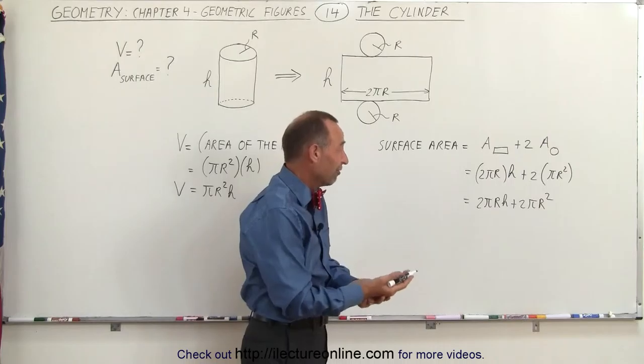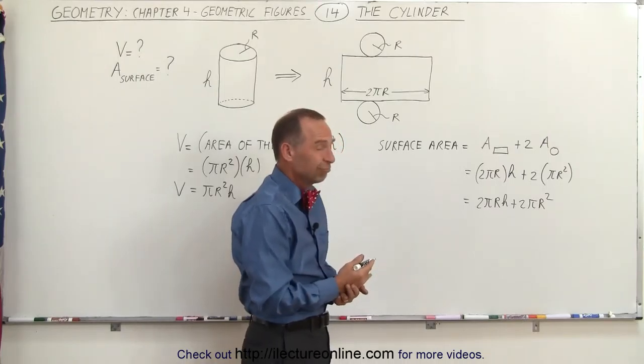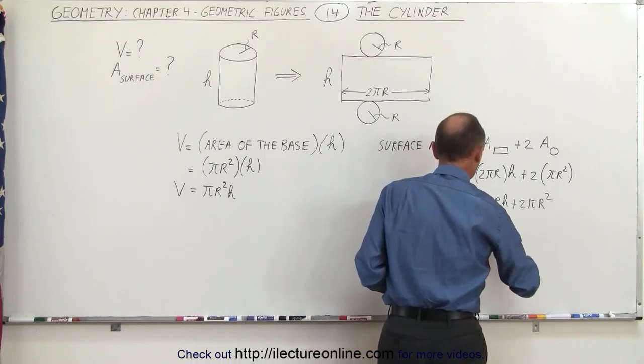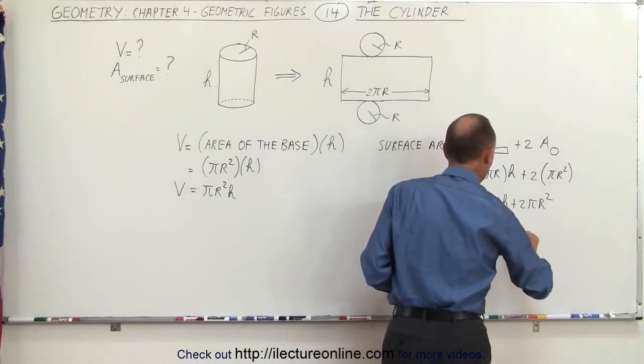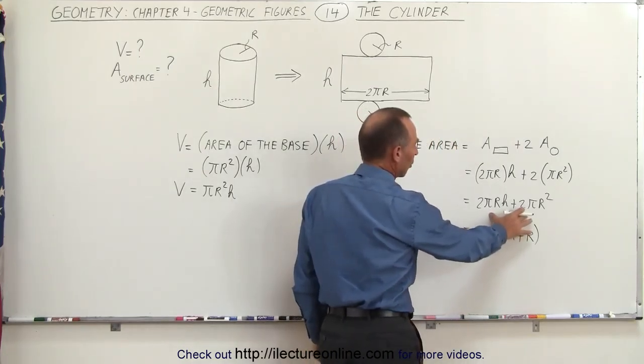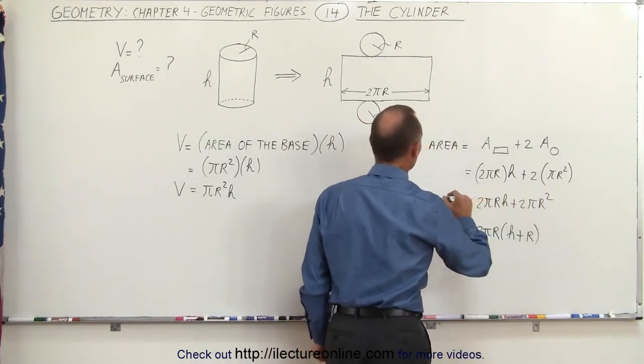What you could do at this point is you could factor out a 2 pi r. You don't need to do that but it looks a little bit better. This is equal to 2 pi r times h plus r. So that way you can make it look like this or you can make it look like this essentially.